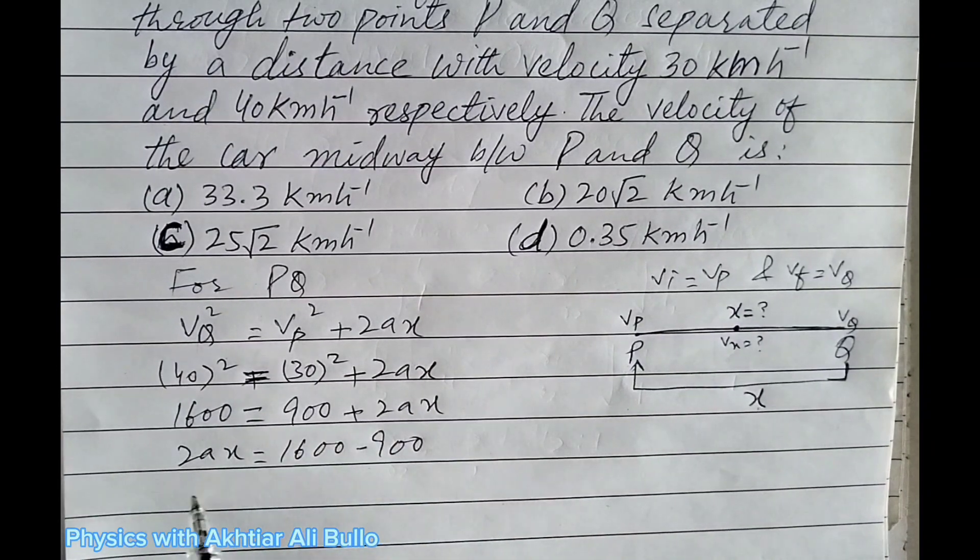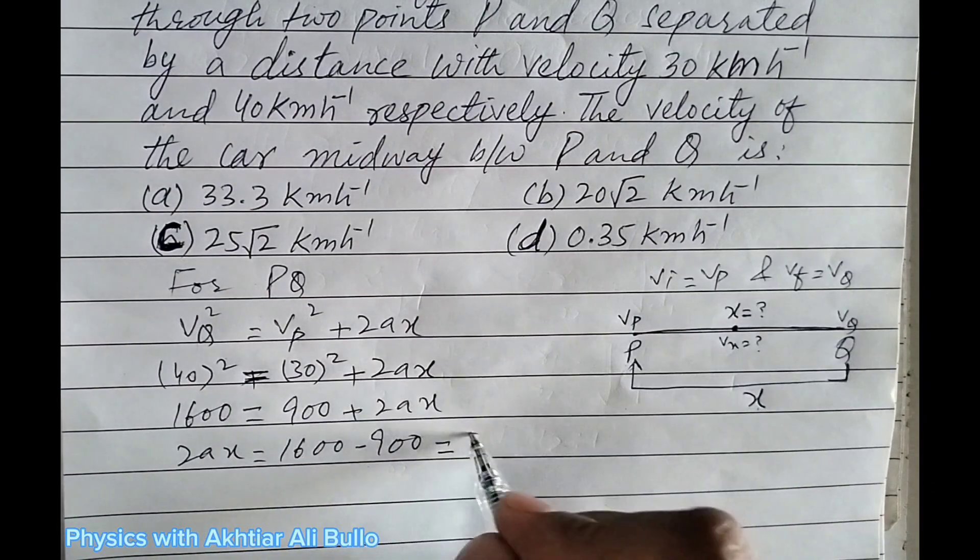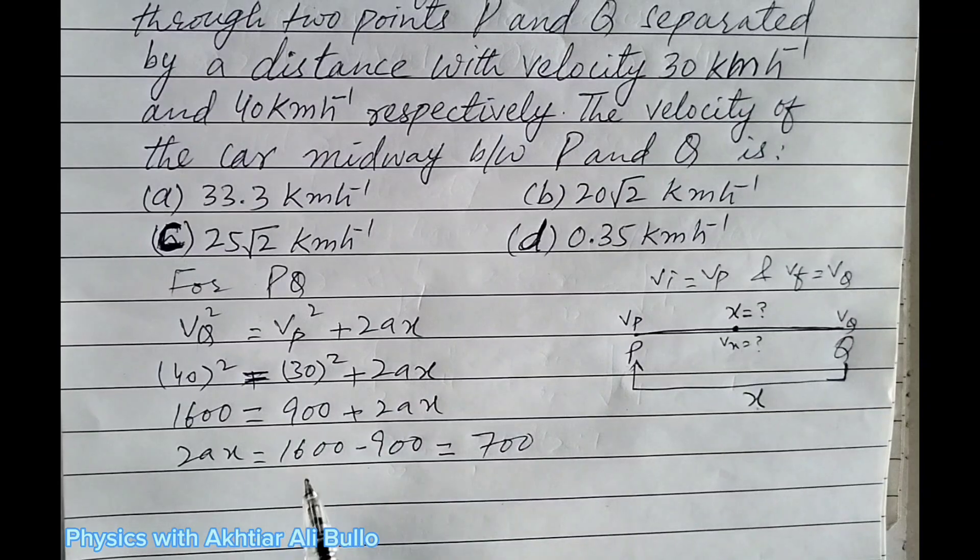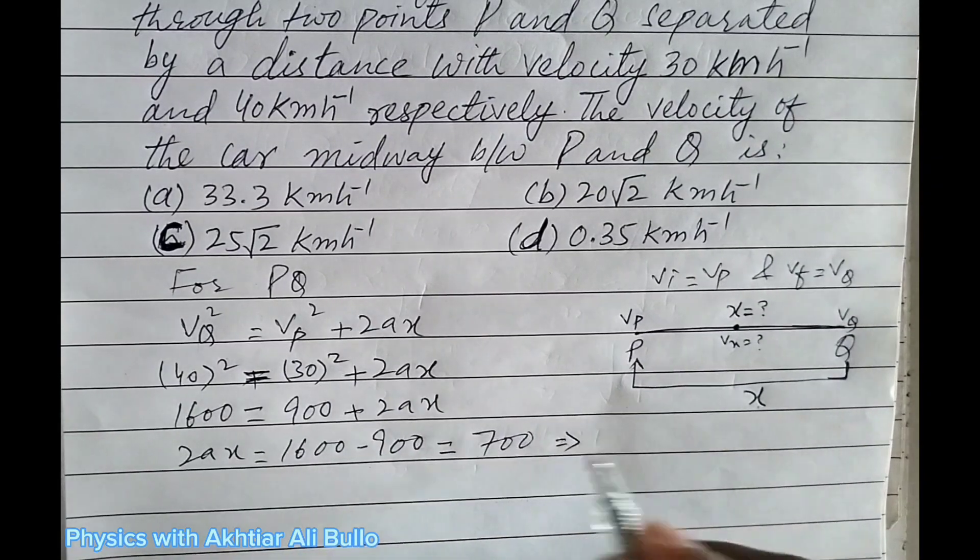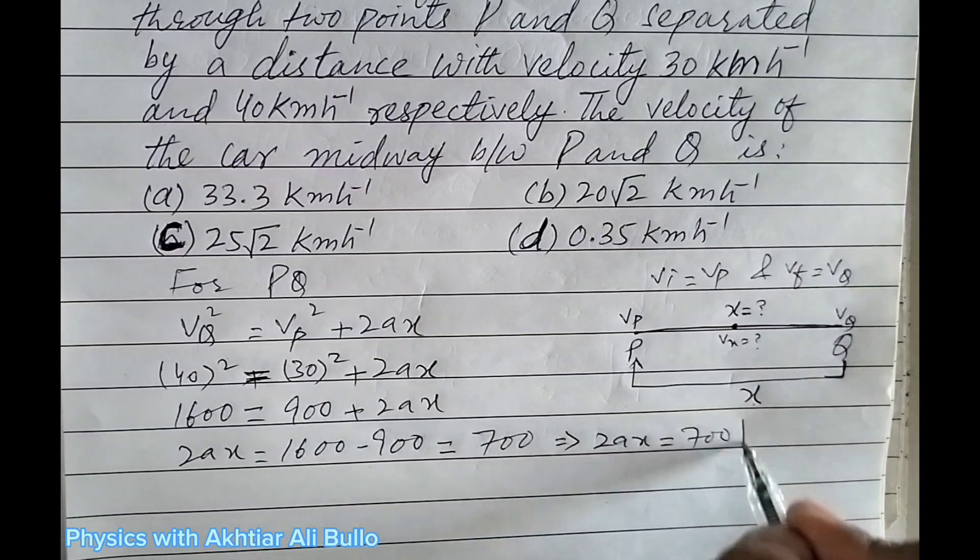So 2aX will be obtained as 700. So 2aX will be equal to 700.